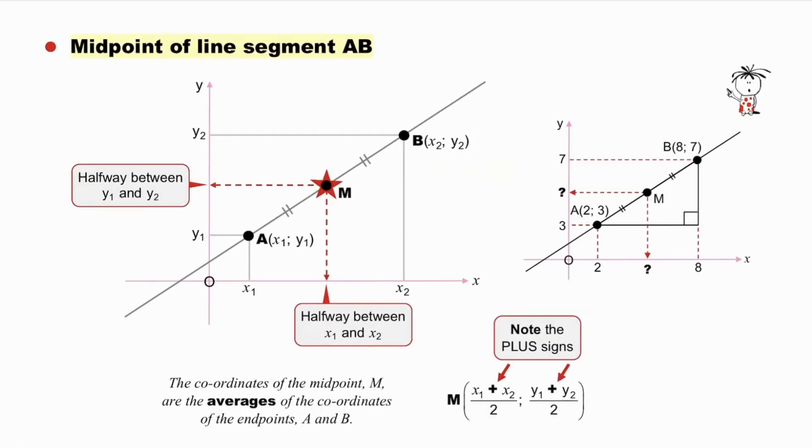The last formula, the midpoint of line segment AB. Consider points A and B as before, and the midpoint M. The x-coordinate of midpoint M lies halfway between x1 and x2, and the y-coordinate of M lies halfway between y1 and y2.